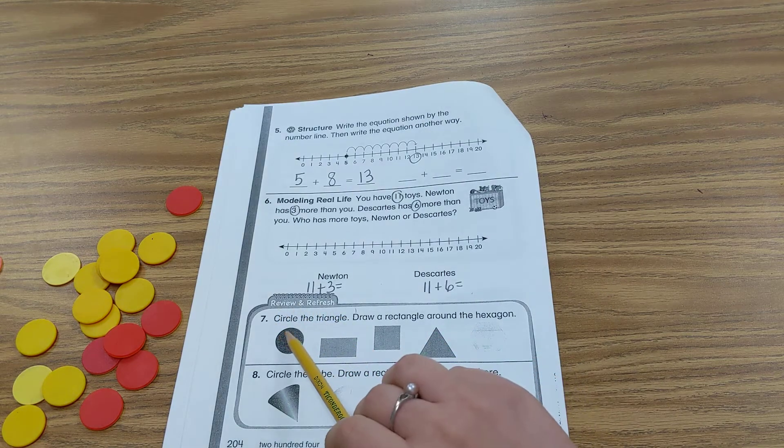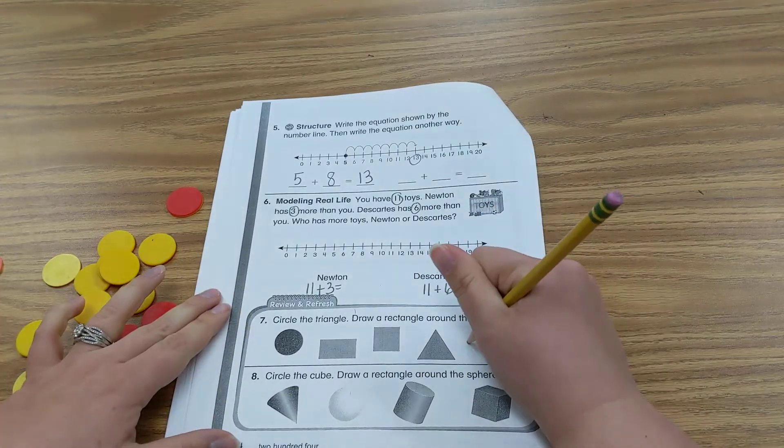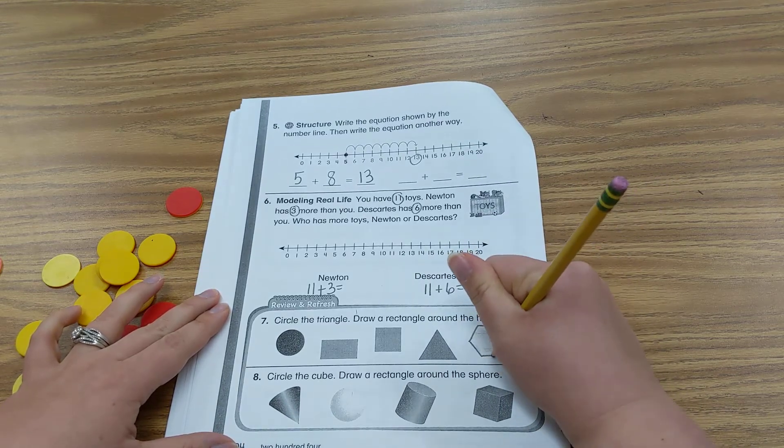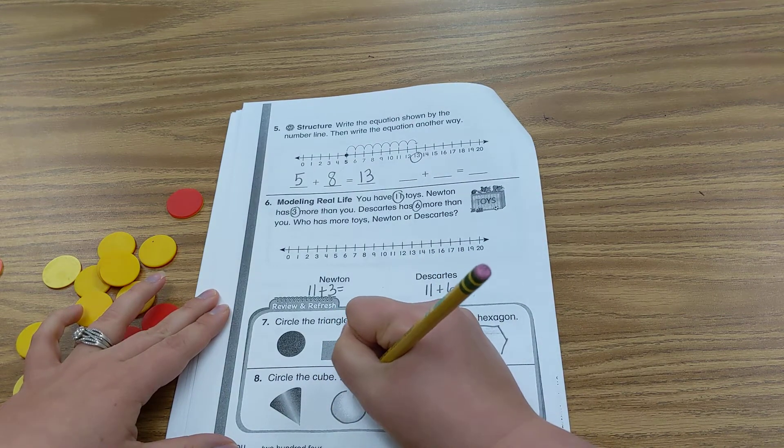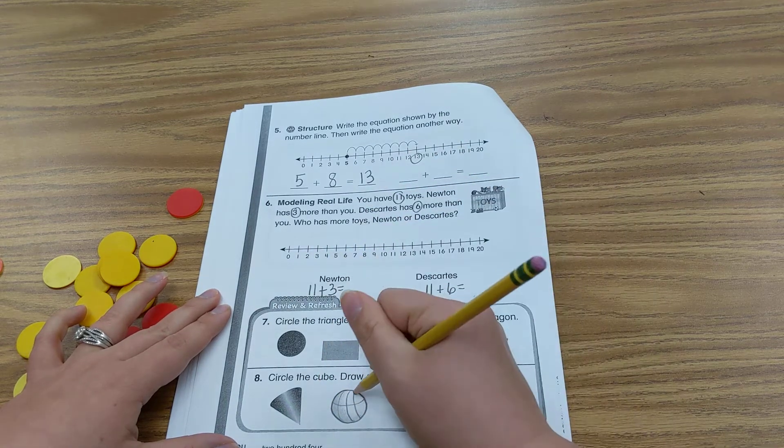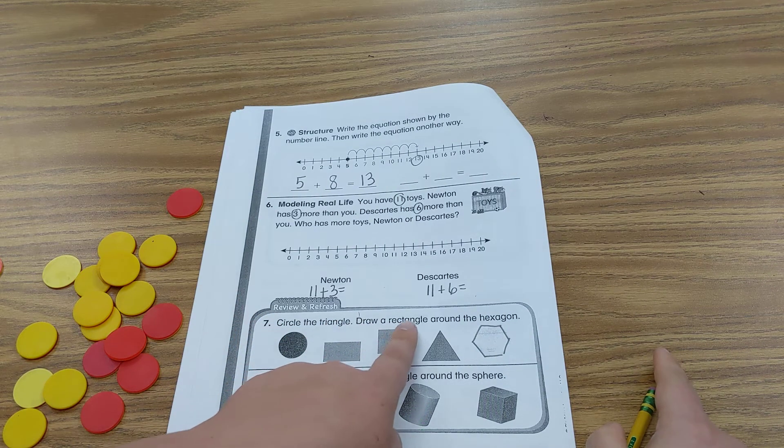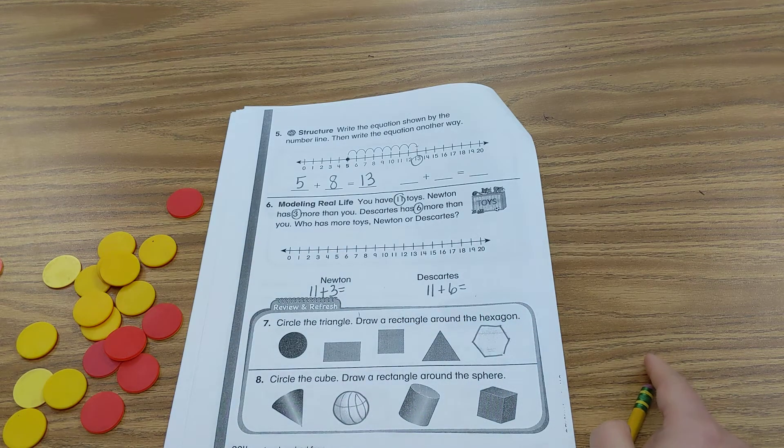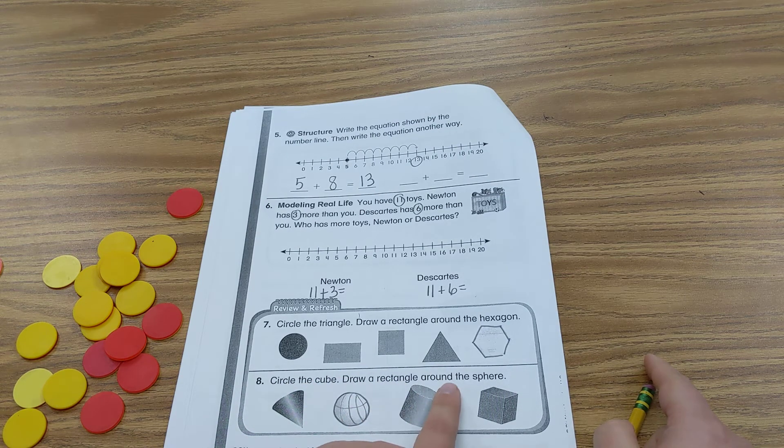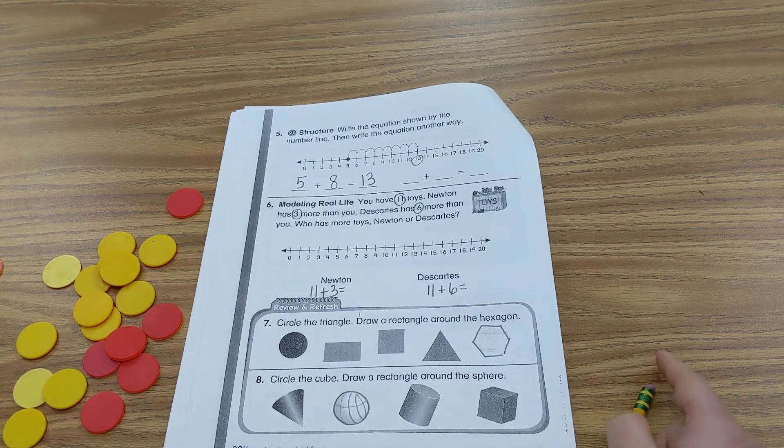Review and refresh. Circle the triangle. Draw a rectangle around the hexagon. Let me make sure you can see. Some of these shapes are not showing up very well. So again, I'm going to say it. Circle the triangle and draw a rectangle around the hexagon for number 7. And number 8, circle the cube and draw a rectangle around the sphere.